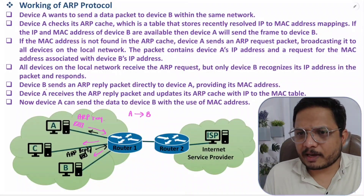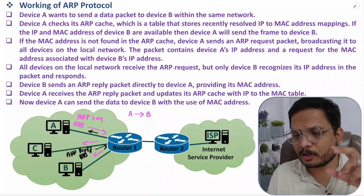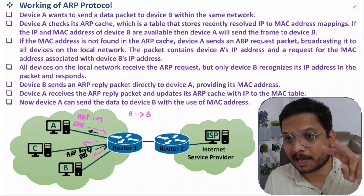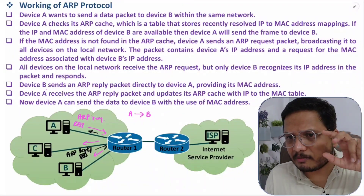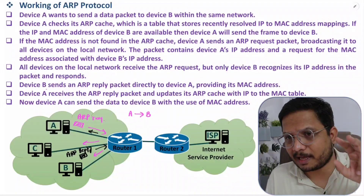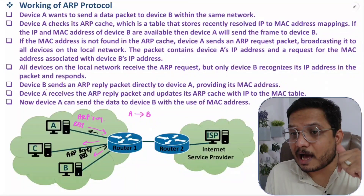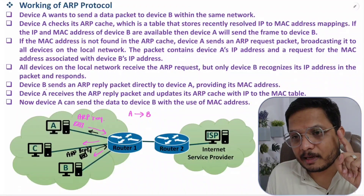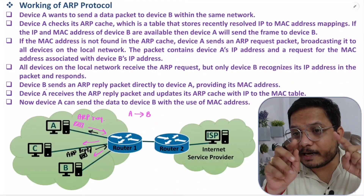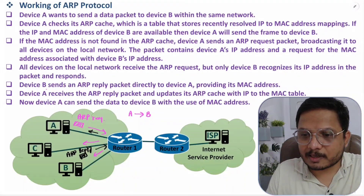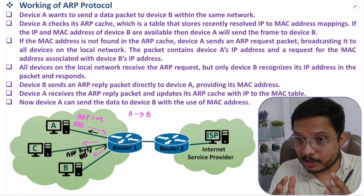So now you have a fair understanding of ARP protocol, which is widely used in computer networks to map IP and MAC address. That mapping is stored in the ARP cache. If a MAC address is not available, the sender sends an ARP request, receives an ARP reply, updates the ARP cache, and can then forward the frame. If you have any questions, please note them in the comment section. Thank you for watching.